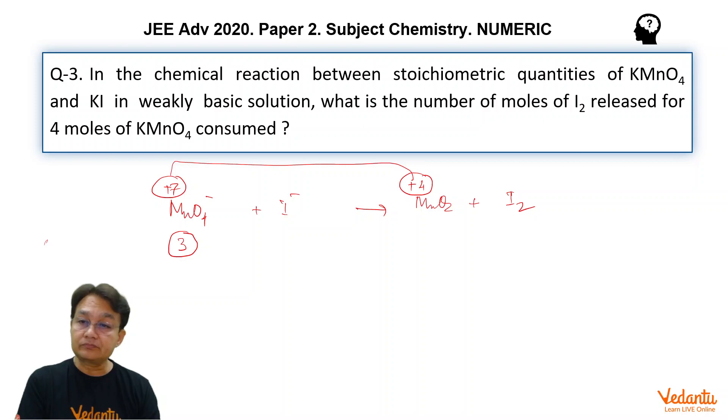Now 4 moles of KMnO4 is consumed. 4 mole equals 4 into 3 equals 12 equivalents. So in this reaction the number of equivalents of MnO4 negative used equals 12.